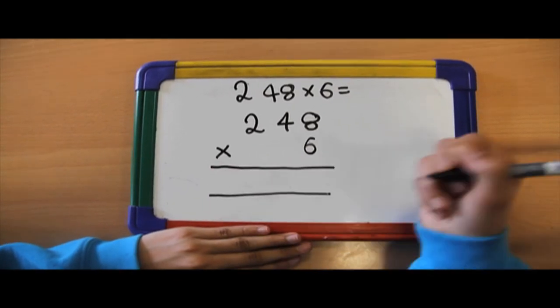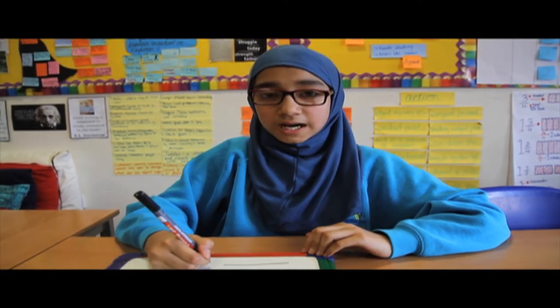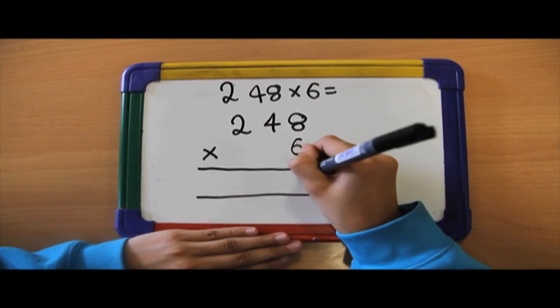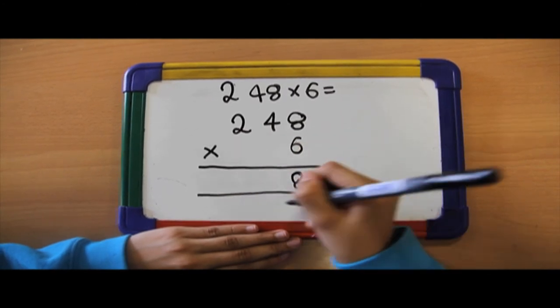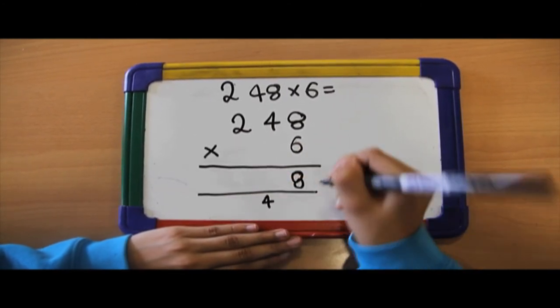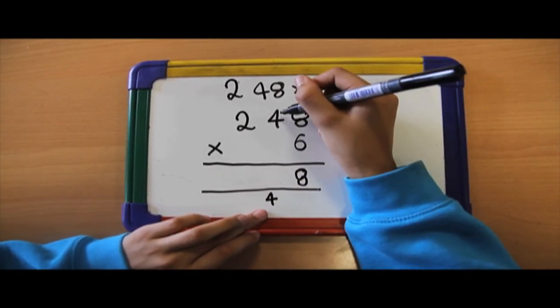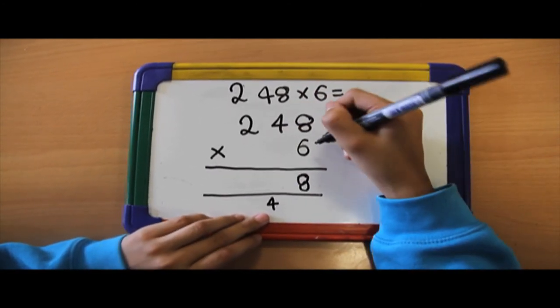Don't forget to put the lines so you know that it's easier for yourself. So first, you're going to do 6 times 8 which is 48. Place the 8 in the ones column and carry the 40 and place it in the tens column.